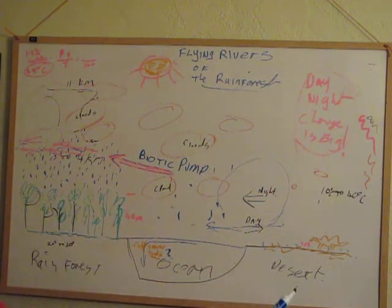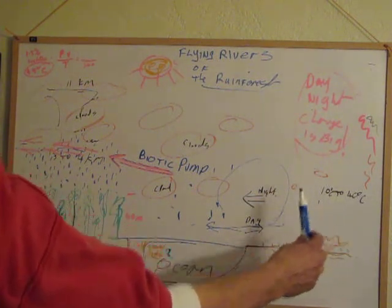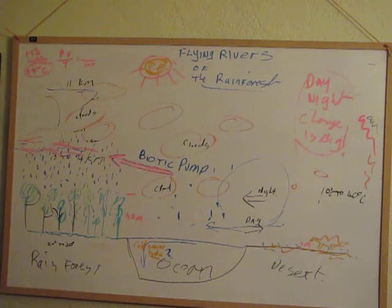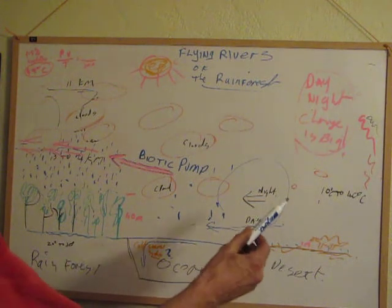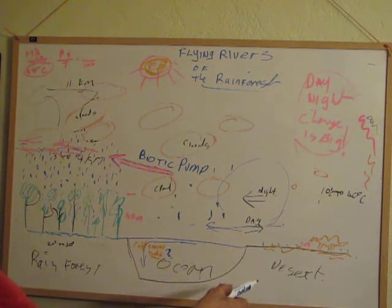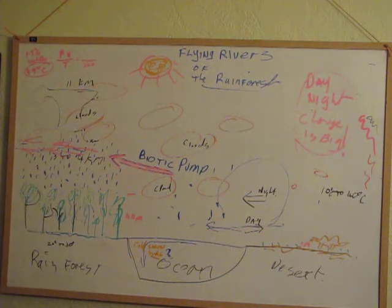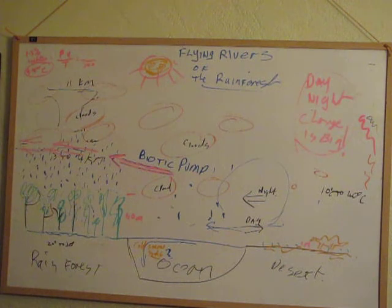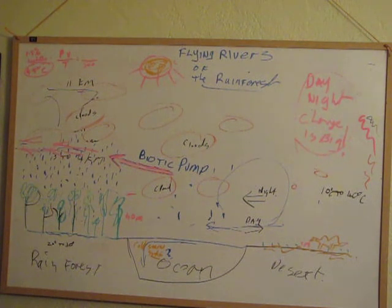In the desert, we have a temperature swing of 10 to 40 degrees — around 10 at night and up to 40 in the daytime. This means that at night there's high pressure over the desert because the heat radiates off into space really quickly. At daytime there's low pressure because 40 degrees makes quite a difference to the pressure of the air. Pressure is lower in response to higher temperature.